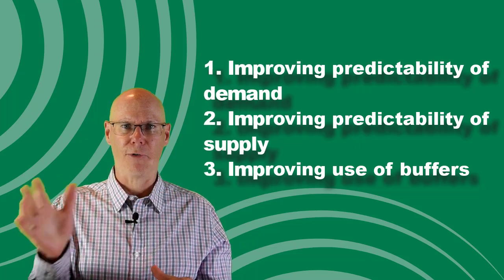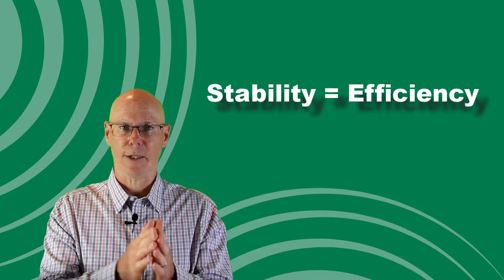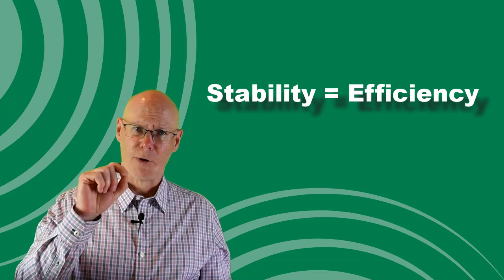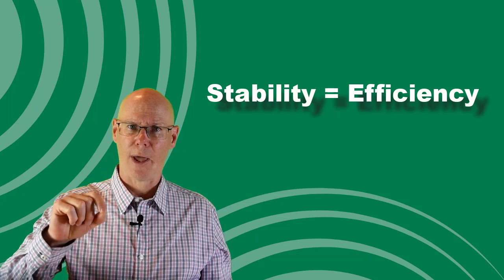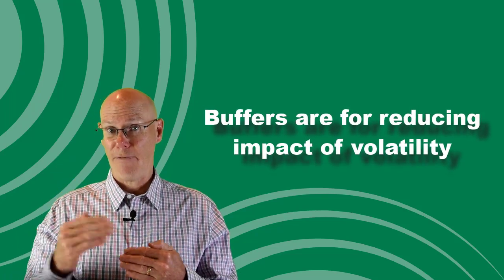All three of these play into improving your overall efficiency. Predictability of demand and supply will support improved planning. The more accurate your plans are and the longer the horizon they cover, this will introduce stability into your operation. Stability results in efficiency. Ultimately it means that you are in control. You will still have volatility in demand and supply, but you are managing the predictable as much as possible.